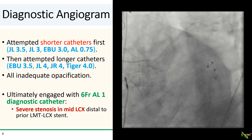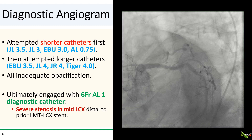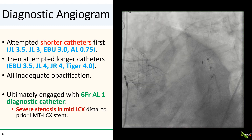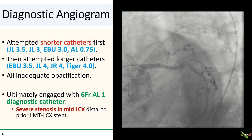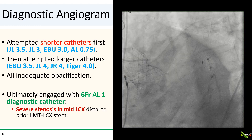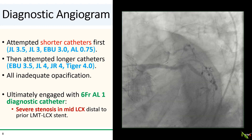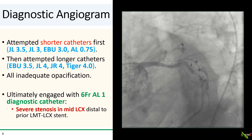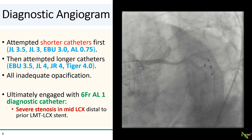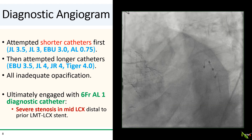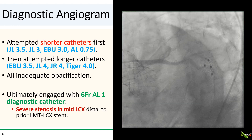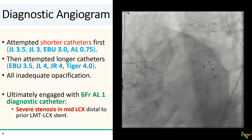We then attempted longer catheters: EBU 3.5 and JL 4. I even tried a JR 4—sometimes that works for the left with CoreValves—but that didn't work. We tried both 5 French and 6 French catheters. I accessed his right radial artery and tried again with a Tiger IV catheter, and that didn't work either. After close to an hour, I was about ready to give up and refer this patient to someone more skilled than me. But by some divine intervention, we got in.